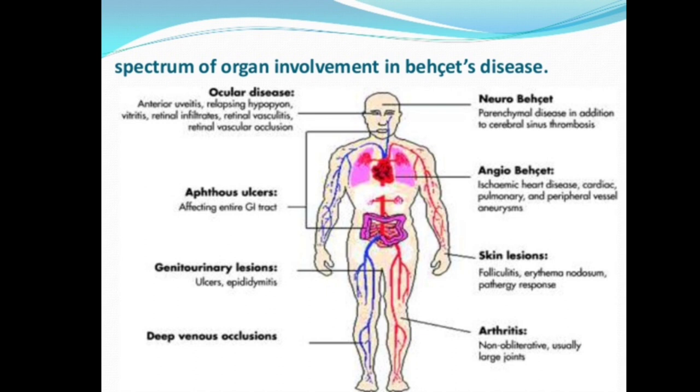In Behcet's you can have ocular involvement, neuro-Behcet's, angio-Behcet's, skin lesions, genitourinary lesions, deep venous occlusions, and arthritis usually affecting large joints.